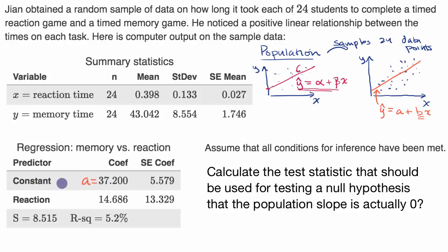a is equal to the constant coefficient, and then the reaction coefficient, this is just telling us for every incremental change in the reaction, how much would we expect the memory time to change, or for every change in x, how much would we expect for a change in y? So this is actually our estimate of the slope of the regression line.